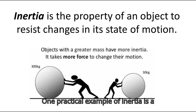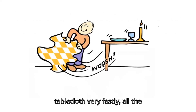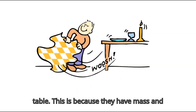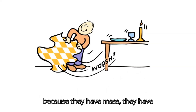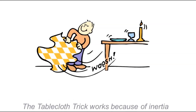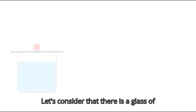One practical example of inertia is the tablecloth trick. When you pull the tablecloth very quickly, all the objects on the table remain still on the table. This is because they have mass, and because they have mass they have inertia — they will resist the motion and remain in their place.